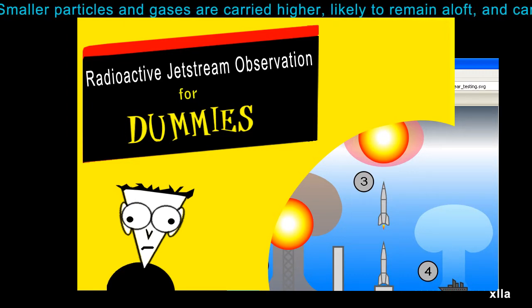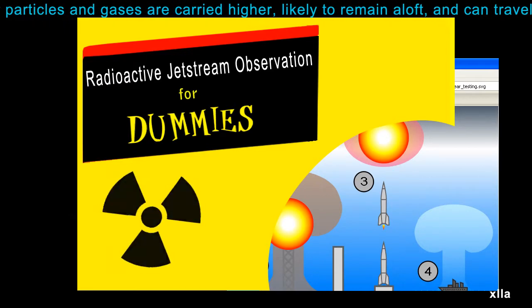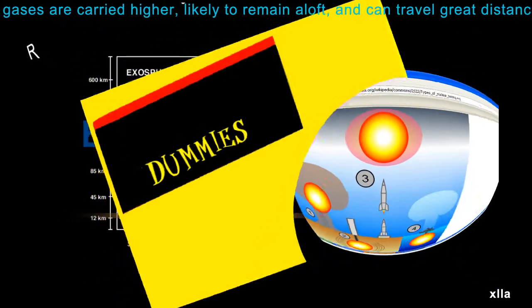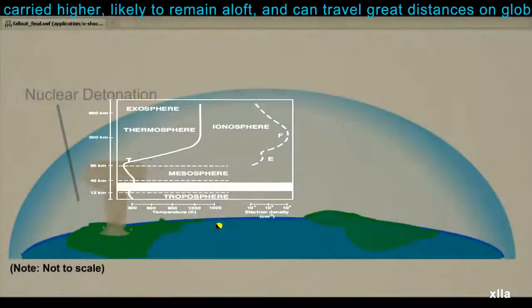Detonating nuclear devices above ground can inject large quantities of radioactive material into the atmosphere. The explosion spreads the material from ground level up to very high elevations.